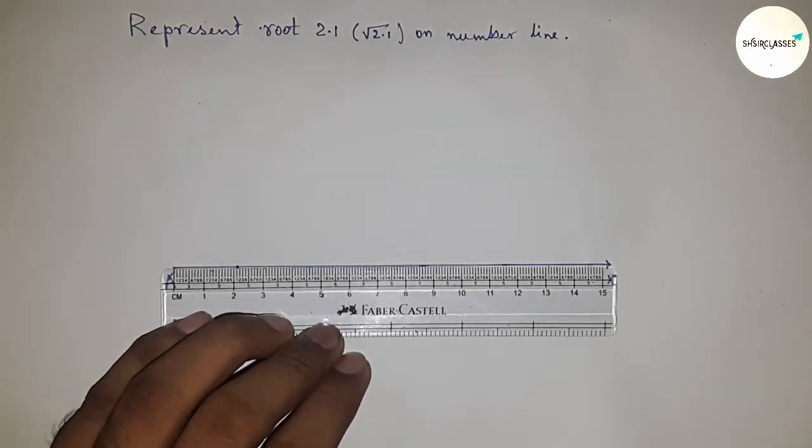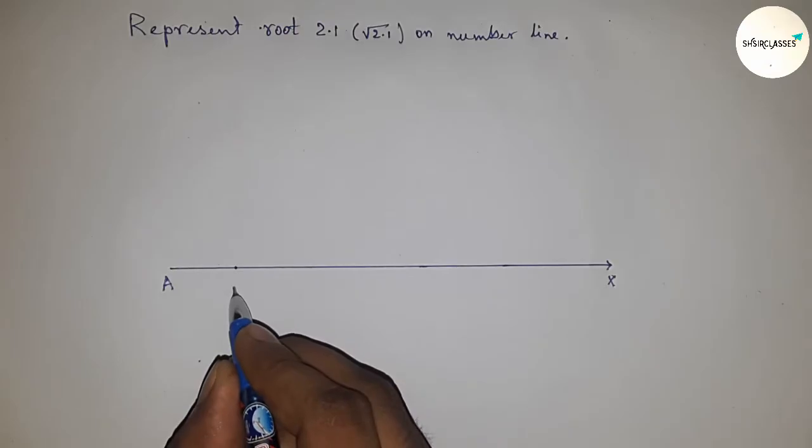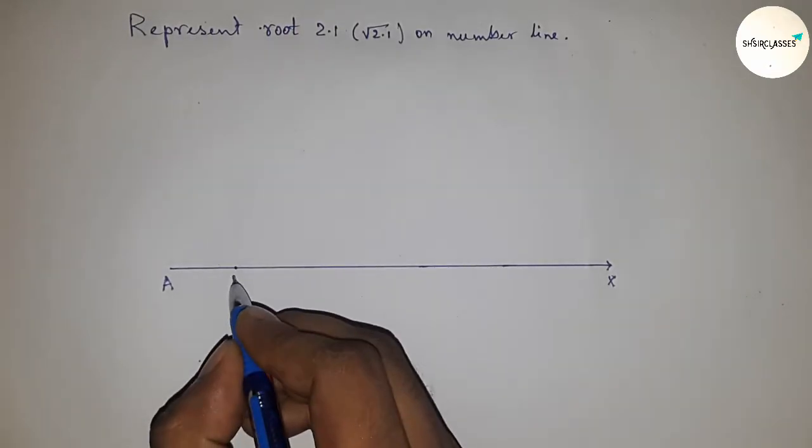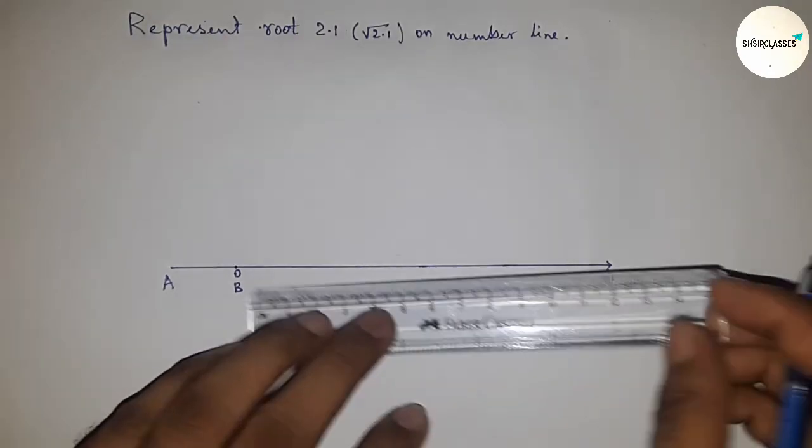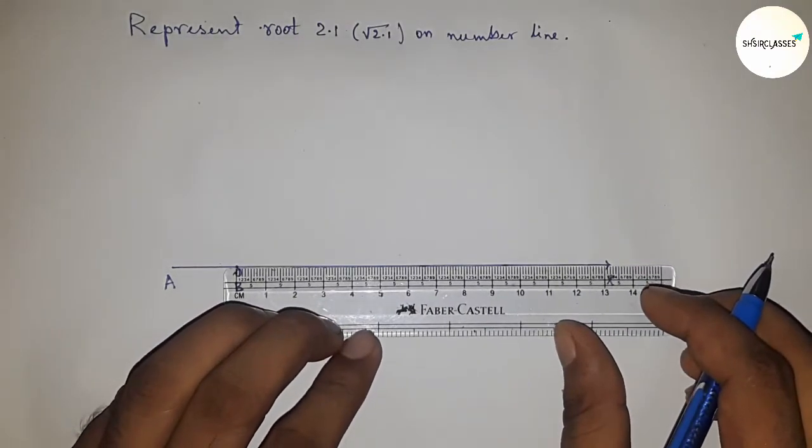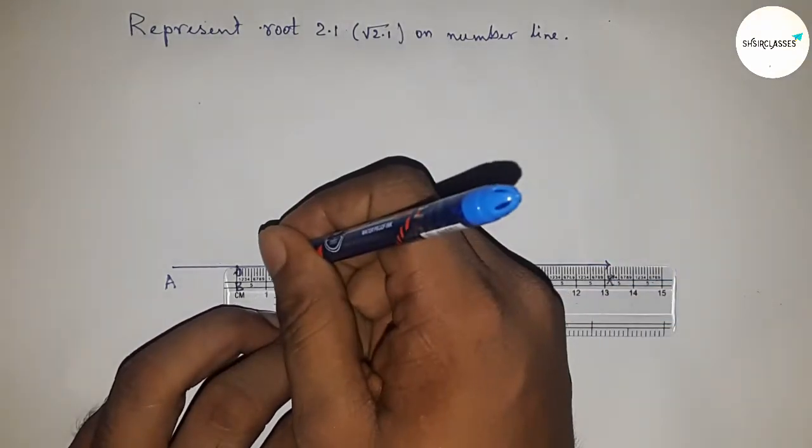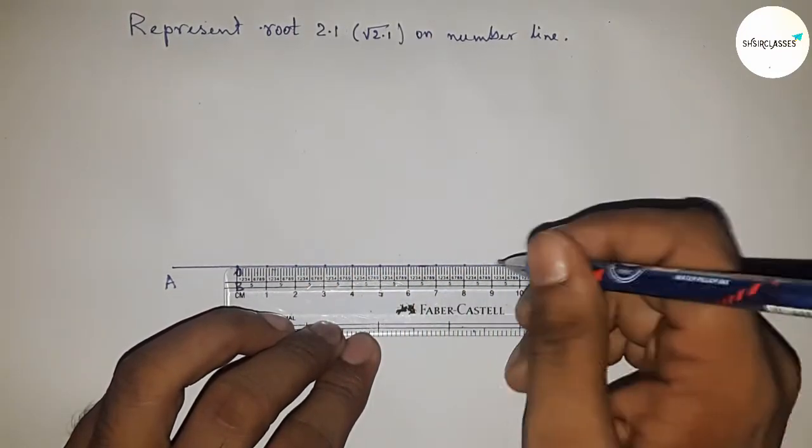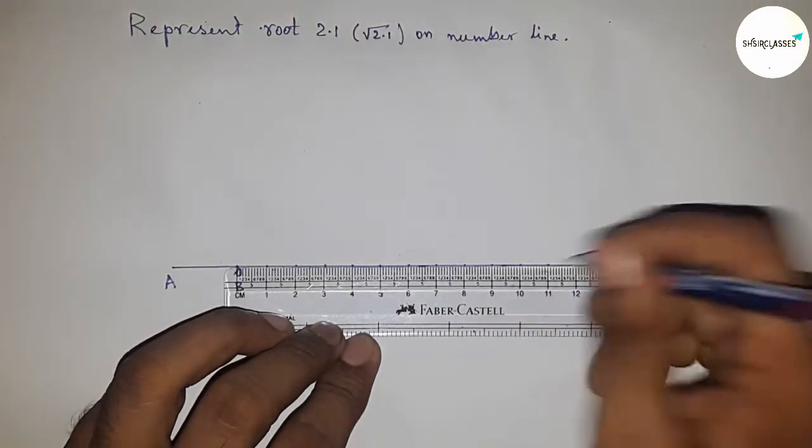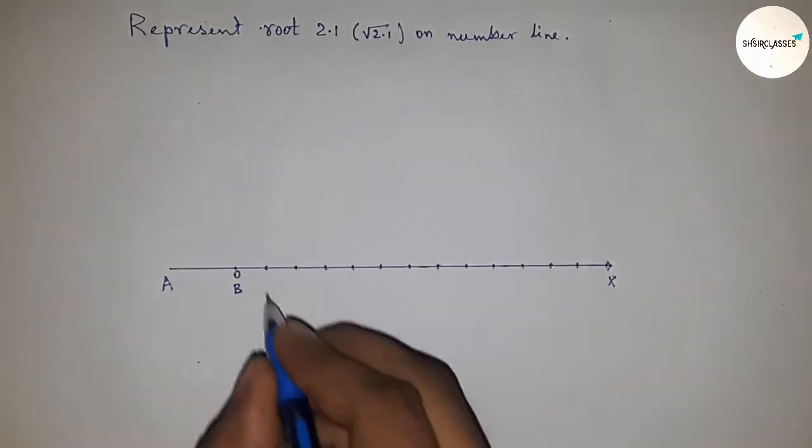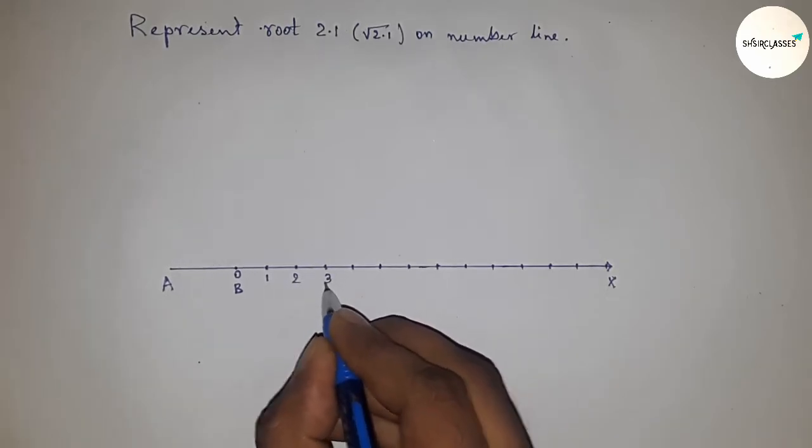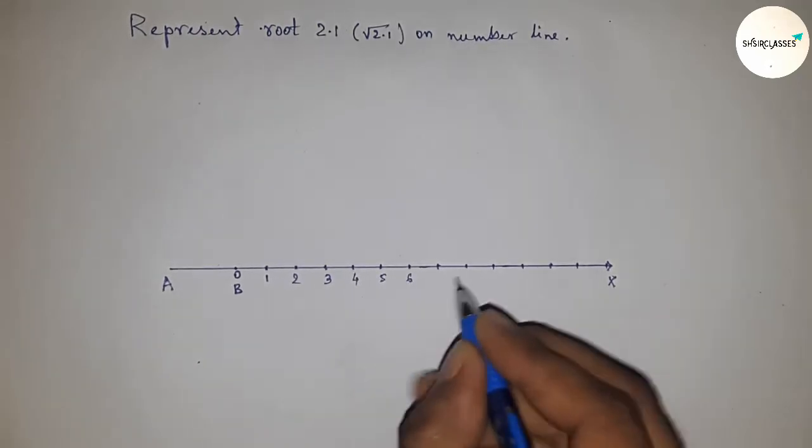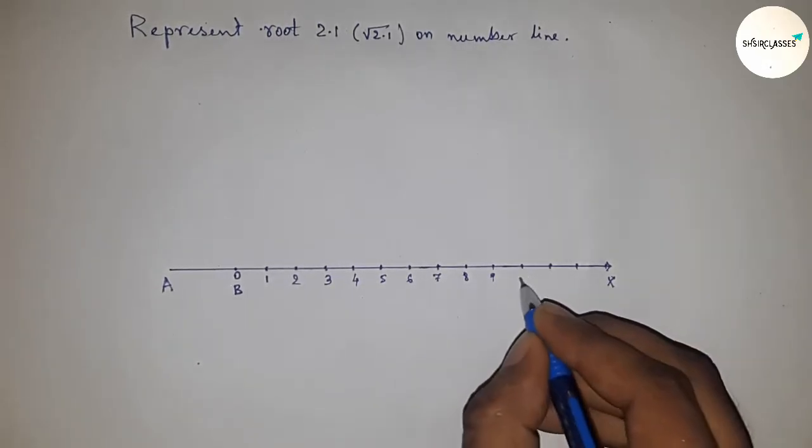This is 2.1 centimeters, taking this as point B and also taking the starting number as zero. Next, mark all the numbers on the line from B to X. So mark all the numbers on the line this way: 1, 2, 3, 4, 5, 6, 7, 8, 9, 10, 11, 12, 13, and so on.